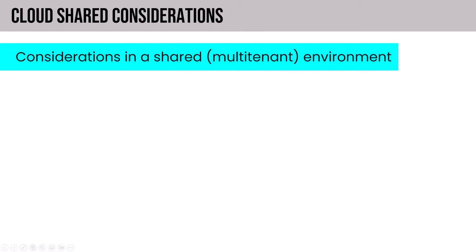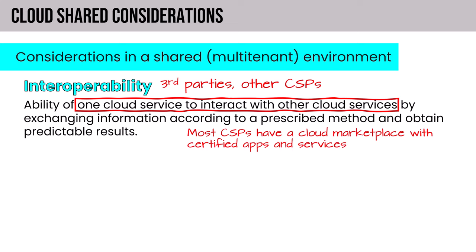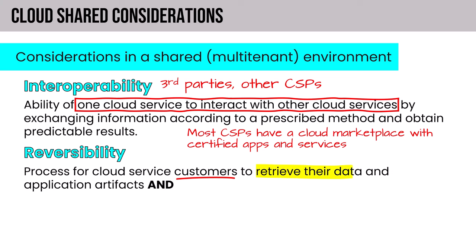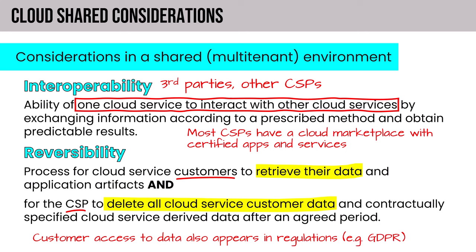Now let's cover cloud shared considerations in a multi-tenant environment. Interoperability is the ability of one cloud service to interact with other cloud services — within a single CSP, between CSPs, or with a third party. Most CSPs have a cloud marketplace with certified apps and services providing paths for interoperability. Reversibility speaks to the process for cloud service customers to retrieve their data and application artifacts, and for the CSP to delete all customer data and contractually specified cloud service derived data after an agreed period. Customer access to data also appears in regulations like GDPR.